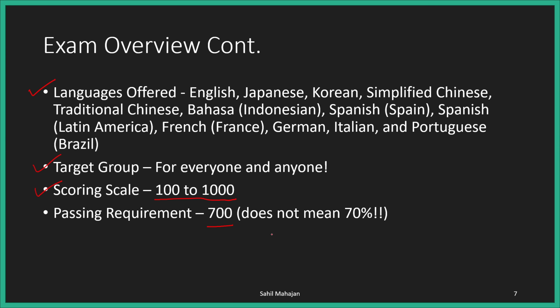Many folks say that 700 out of 1000 means 70%, so they need to get 70% of questions correct — that's not what it means. 700 does not mean 70%. Each question has a different weightage according to its difficulty. Easy questions have less weightage and difficult questions have more weightage.